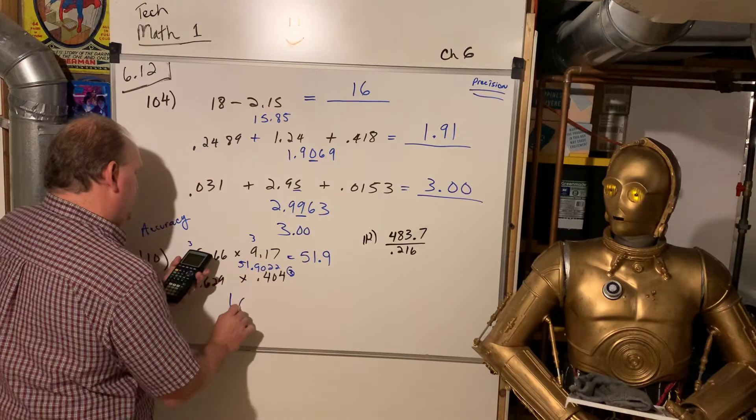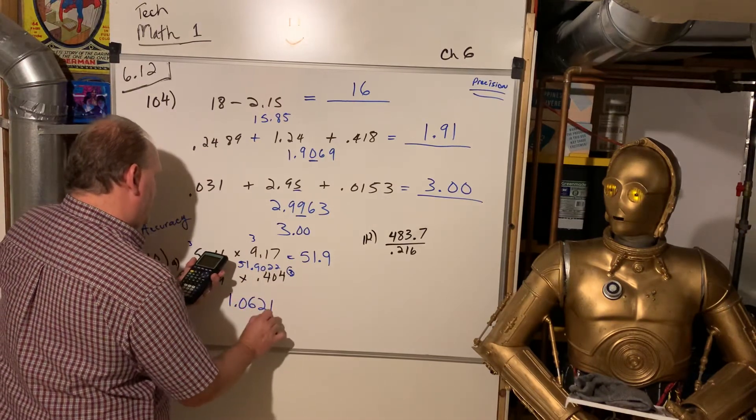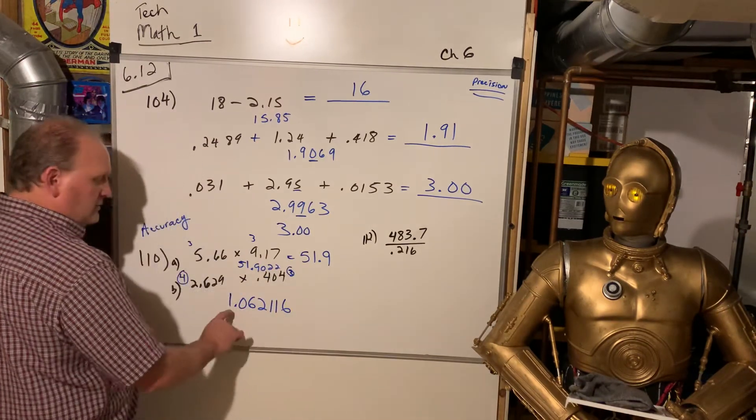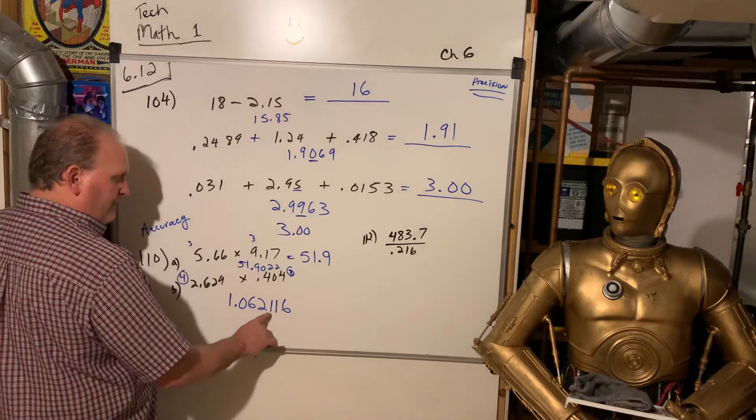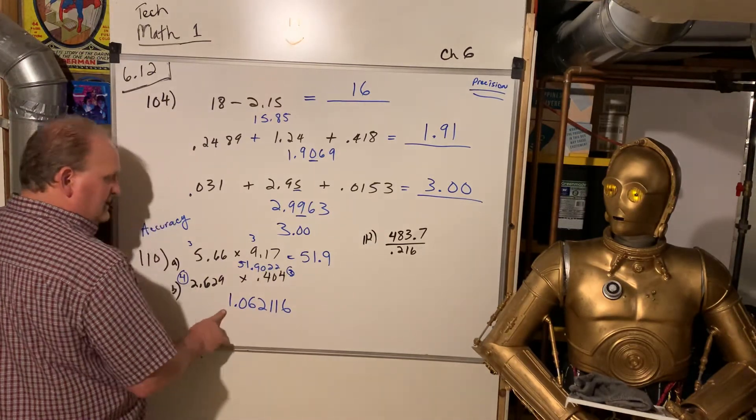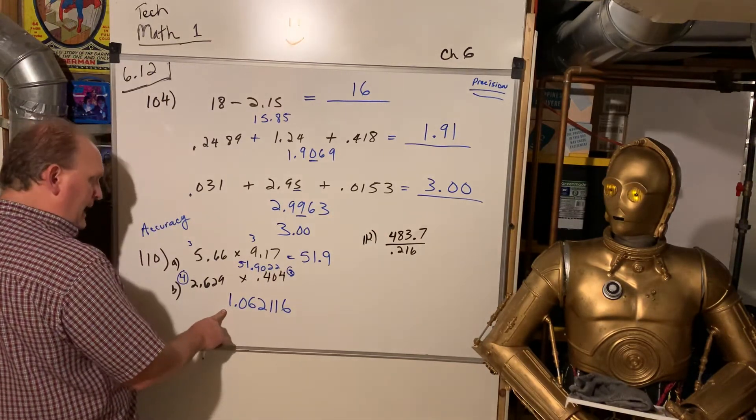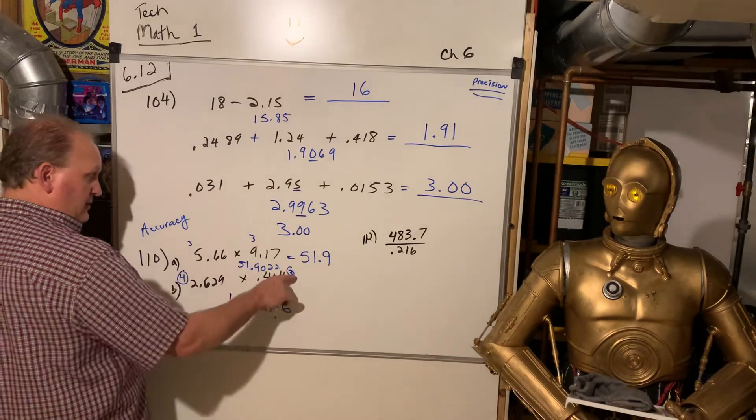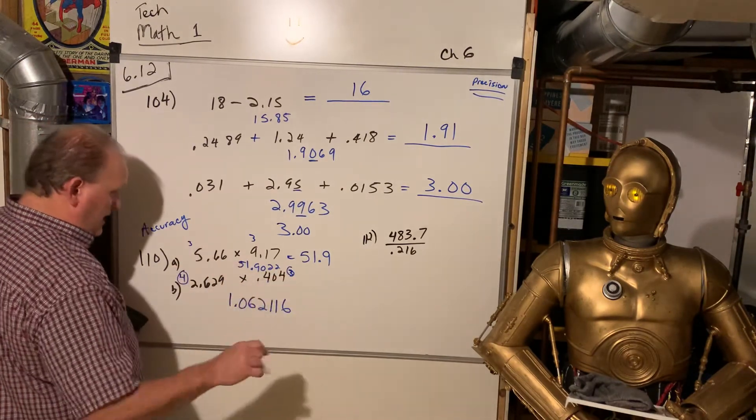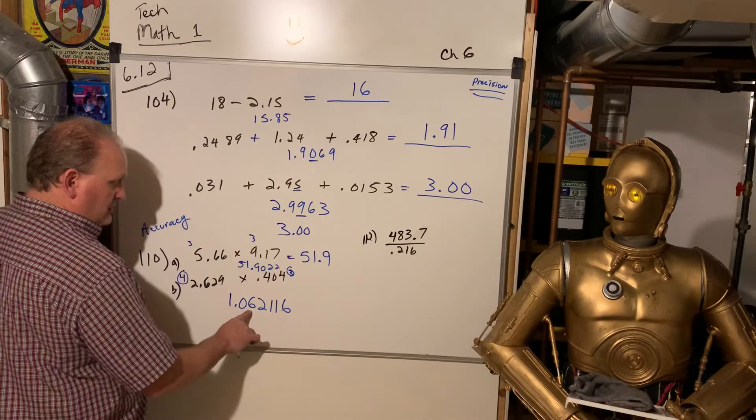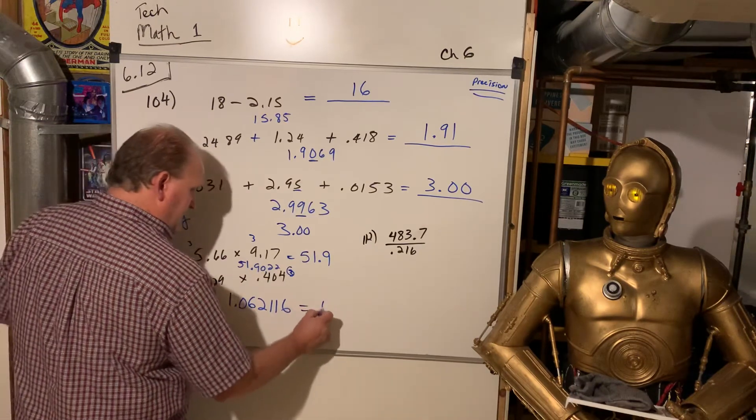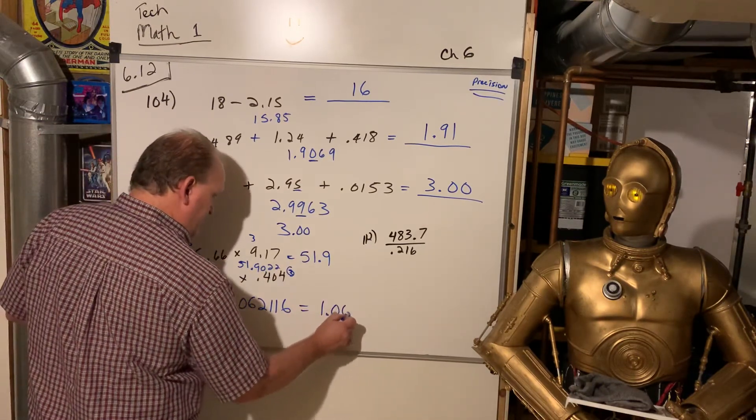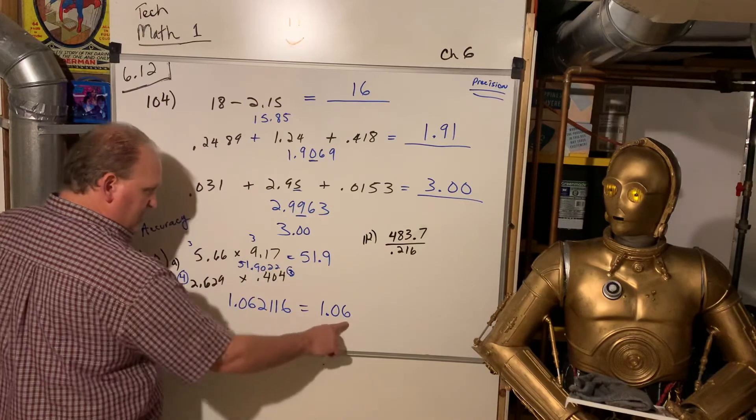That is 1.062116. So, look, that's 1, 2, 3, 4, 5, 6, 7 significant digits, which is way more accurate than the 3. I only get 3, so 1.06 is going to be my answer,